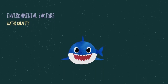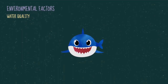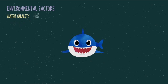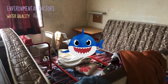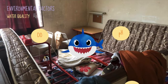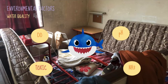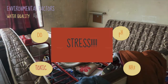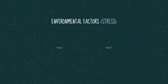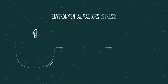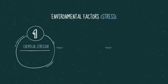The next crucial factor is water quality. Imagine if Nawal is living in an environment with low dissolved oxygen, unbalanced pH, high ammonia, and toxins. This kind of environment will lead her to stress. Stress consists of three causes: the first is chemical stressor, which is low water quality.